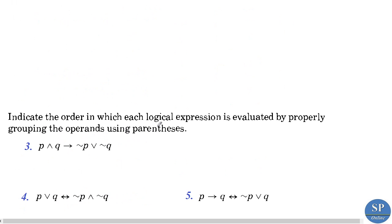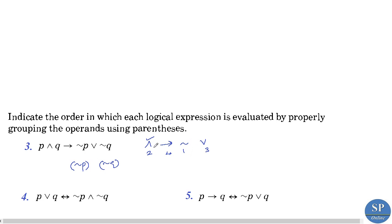Next we have problems asking us to indicate the order in which each logical expression is evaluated by grouping operations using parentheses. For example: p conjunction q implies negation-p disjunction negation-q. The operators are conjunction, implication, negation, and disjunction. The order is: first negation-p, then negation-q, then conjunction p∧q, then the disjunction, and finally the implication.